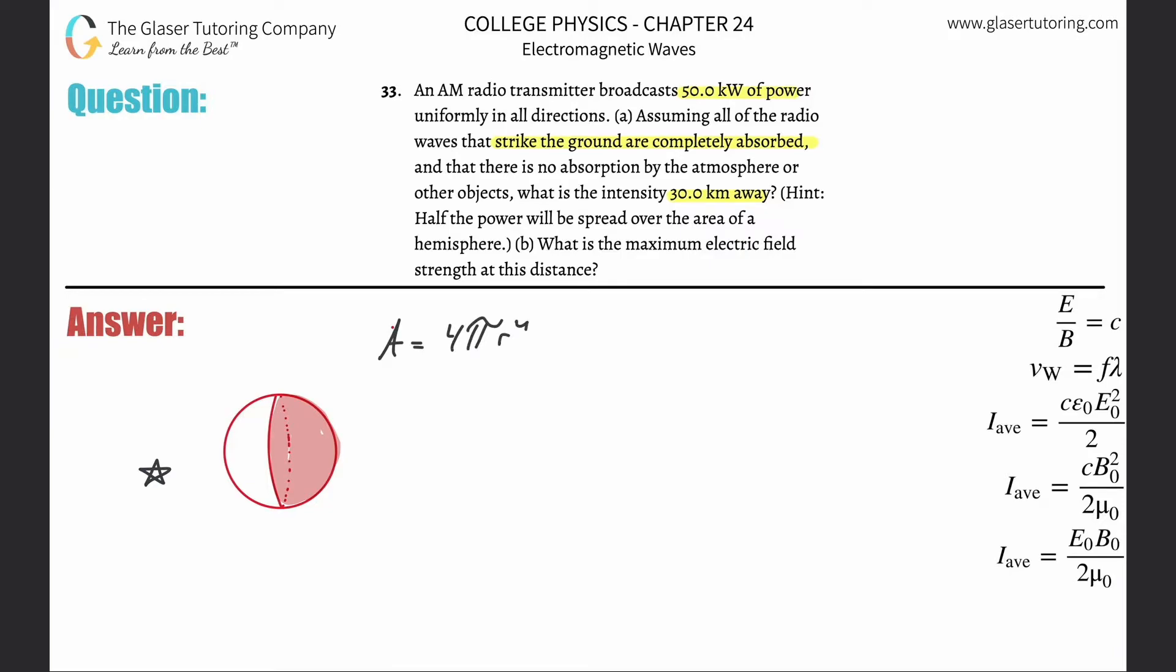It's very close to the area of a circle, but there's a 4 there. But now they're saying that all this energy is going to be distributed basically over half of that sphere in one direction, so just take that and divide it by 2. In other words, the area of importance is going to be 2πr².